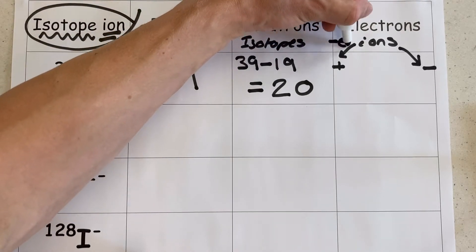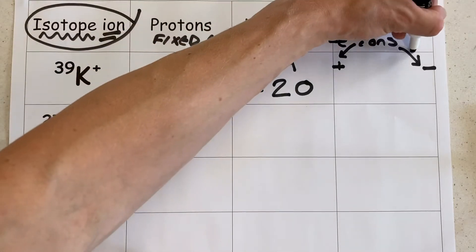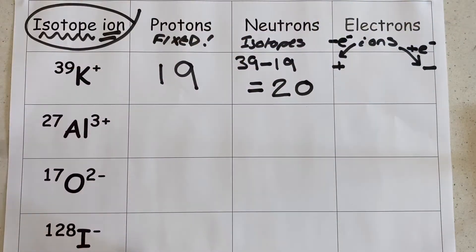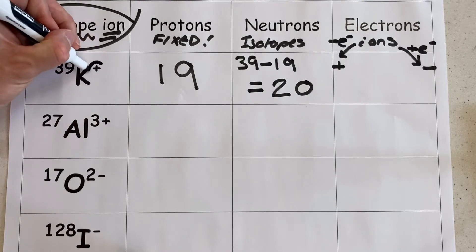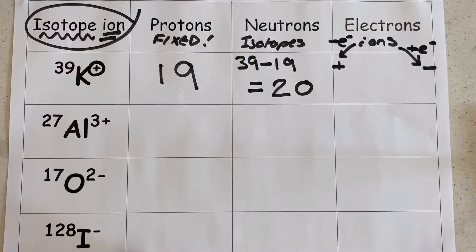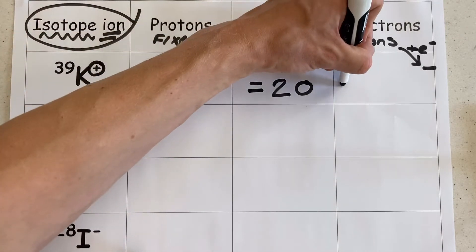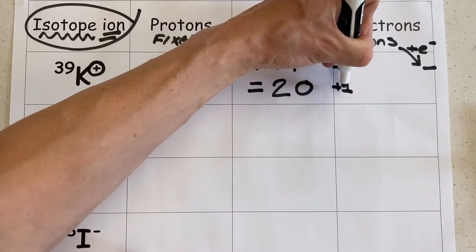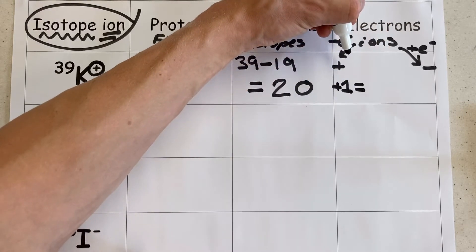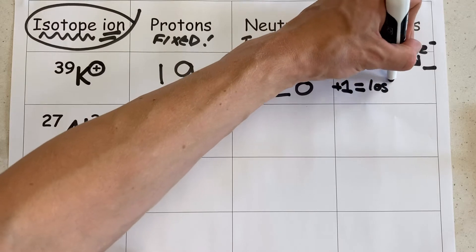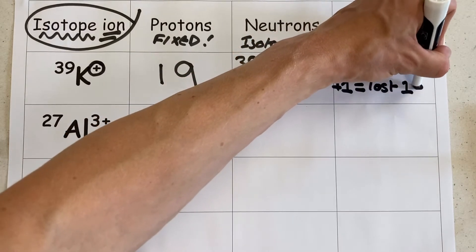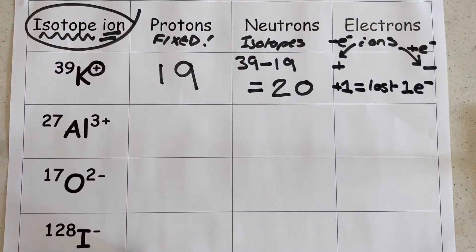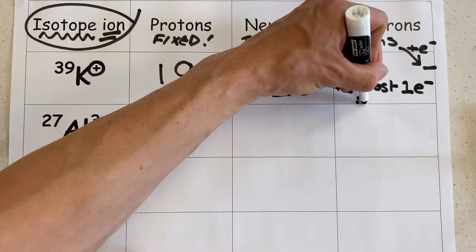A positive ion has lost electrons. A negative ion has gained electrons. Since it is a 1+ charge in this case, that means we have lost one electron, allowing there to be more protons compared to electrons. It's not that I've added a proton — it's that I've lost an electron because I can't change the proton number. As a result, the number of electrons in this ion of our potassium isotope is going to be just 18.